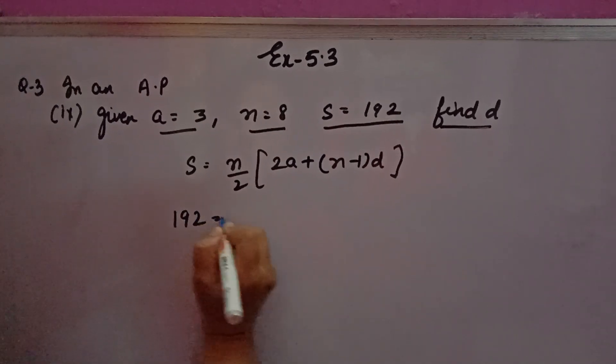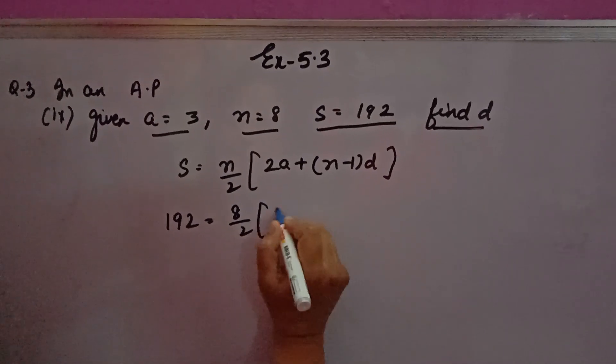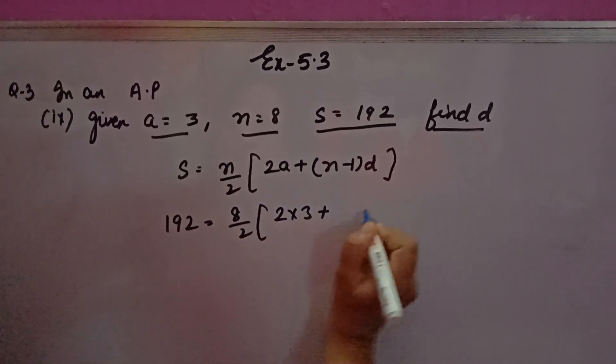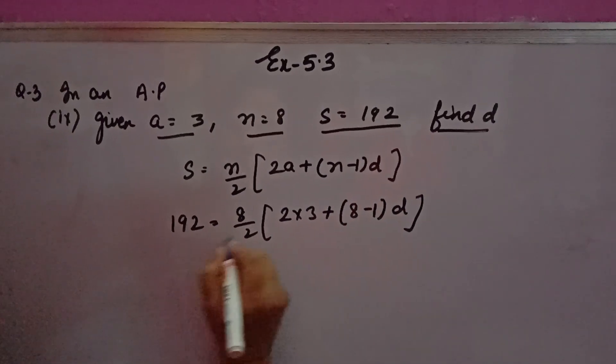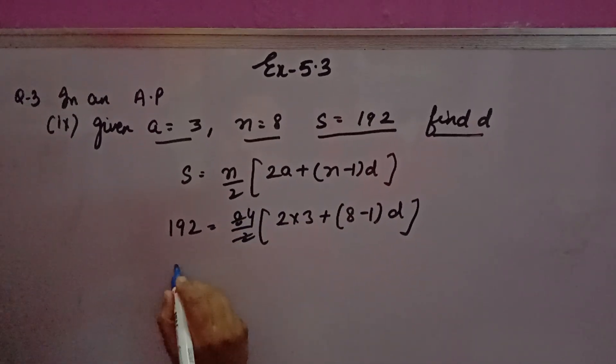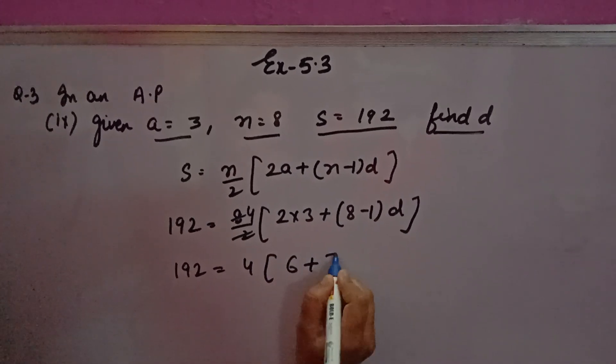S is 192, so here you will put 192. N is 8, so 8 over 2, 2 into 3 plus 8 minus 1 into d. 192 is equal to 4 times 2 times 3, which is 6, plus 7d.